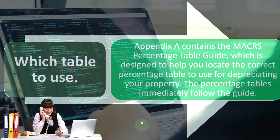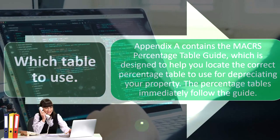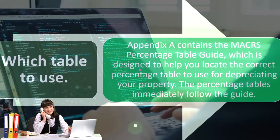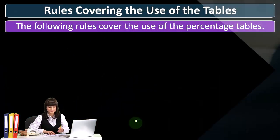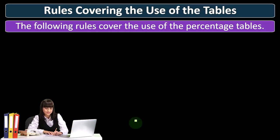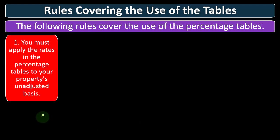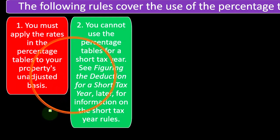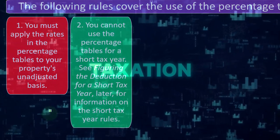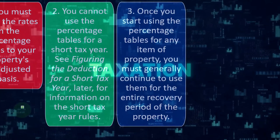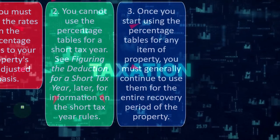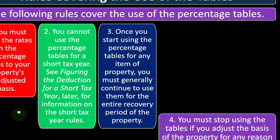Regarding which table to use: Appendix A contains the MACRS Percentage Table Guide, designed to help you locate the correct percentage table for depreciating your property. The percentage tables immediately follow the guide. Rules covering the use of the tables: Number one, you must apply the rates in the percentage tables to your property's unadjusted basis. Number two, you cannot use the percentage tables for a short tax year. Number three, once you start using the percentage tables for any item of property, you must generally continue to use them for the entire recovery period of that property — consistency.